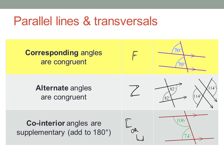Corresponding Angles are congruent. The angles on each of the parallel lines, in the same corresponding position relative to the transversal, are the same size. Can you see the F shape from the coded symbol? Sometimes the F may be backwards or upside down. Corresponding Angles are congruent.